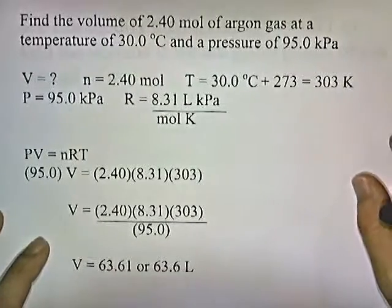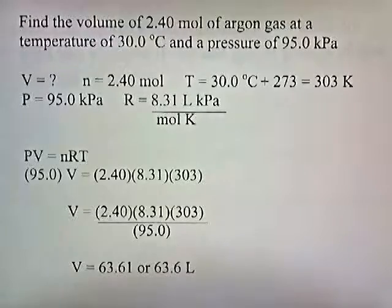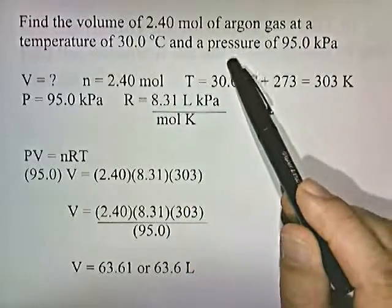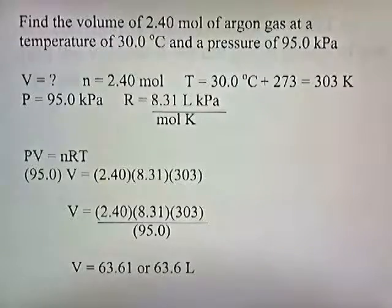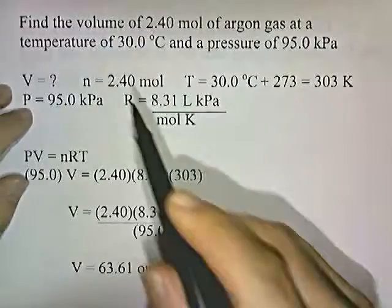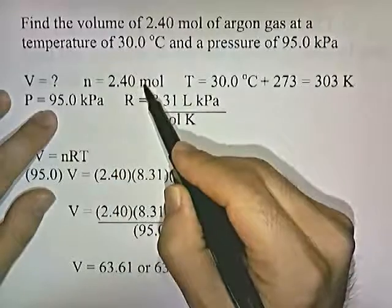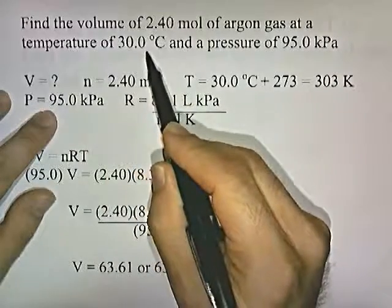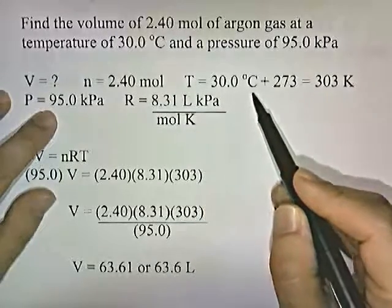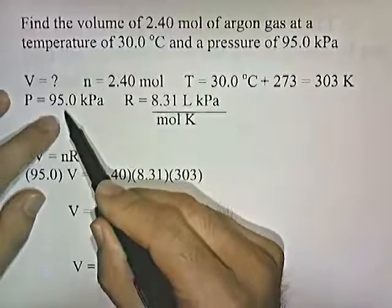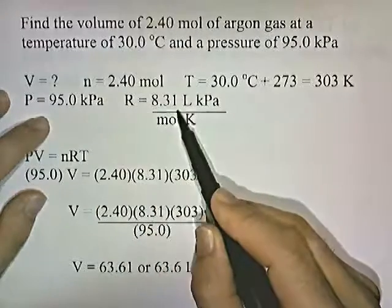Let's try a problem. Find the volume of 2.4 moles of argon gas at a temperature of 30 degrees Celsius and a pressure of 95 kilopascals. So let's figure out what they ask for and what they give us. Find the volume, we're trying to find V. 2.4 moles, that's N. Temperature of 30 Celsius, we have to convert this temperature into Kelvin. We add 273 and our temperature is 303 Kelvin. Pressure is 95 kPa. And R is always 8.31.